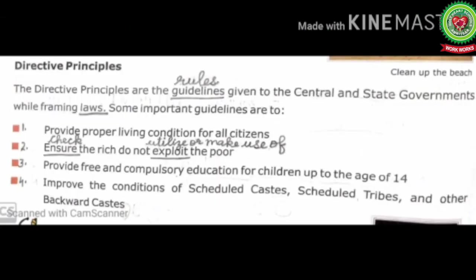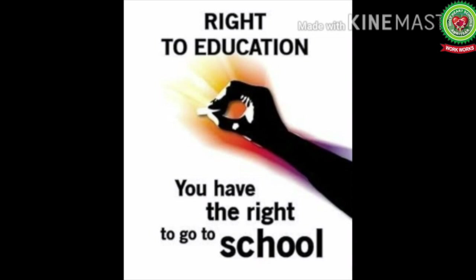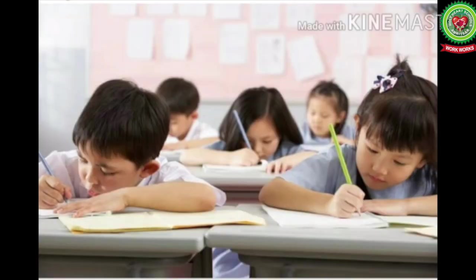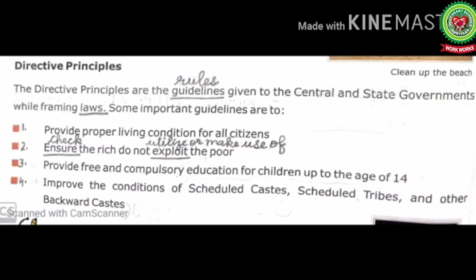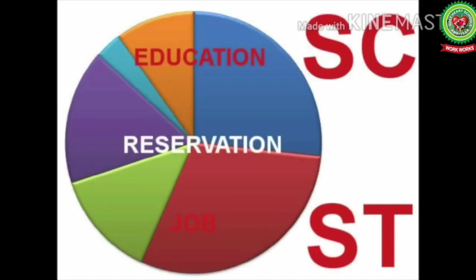Number three — provide free and compulsory education for children up to the age of 14. The government should provide free and compulsory education to all children up to the age of 14 years. Number four — improve the conditions of Scheduled Castes, Scheduled Tribes, and other Backward Castes by giving them facilities like subsidies, low-interest rates, better education, reservation, and job facilities.